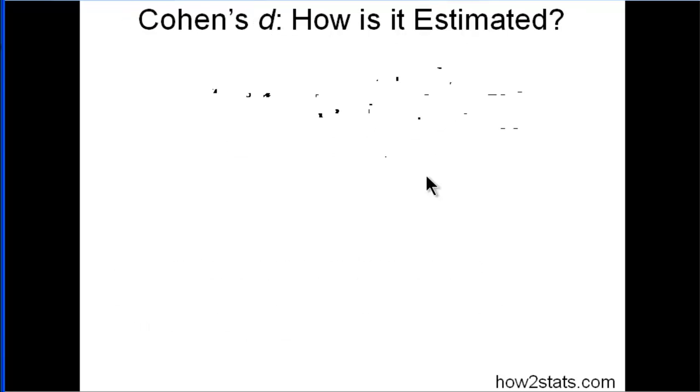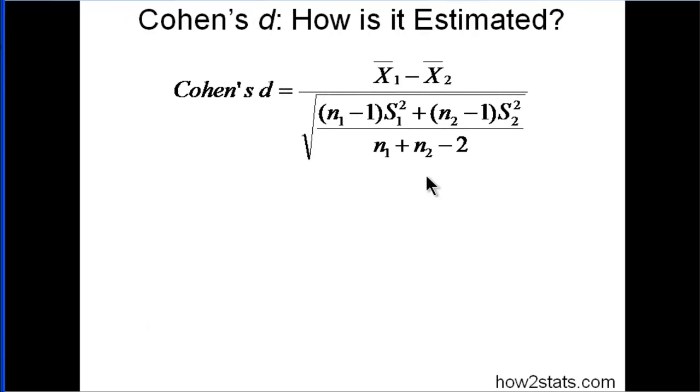Now Cohen's D is different because it takes into account both the standard deviation or variances associated with both sample means. So the mean one, mean two, the difference between the two, divided by the square root of this ratio here, which is basically variance multiplied by its sample size, and the second variance multiplied by its sample size.